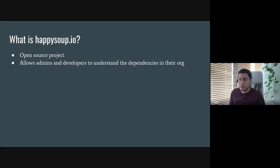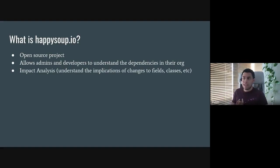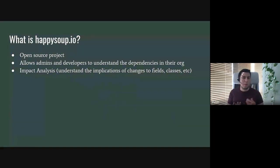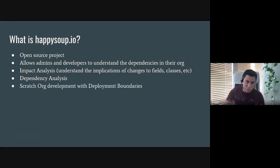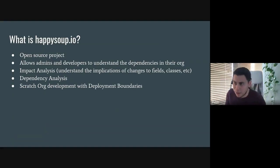The main idea is to allow admins and developers to understand dependencies in the org. Dependencies come in two flavors. The first is impact analysis: understanding the implications of a change you're making — for example, editing a custom field, replacing a picklist value, or changing an Apex class. The second flavor is dependency analysis, which sounds similar but is different, and it leads to the concept of deployment boundaries for scratch org development.